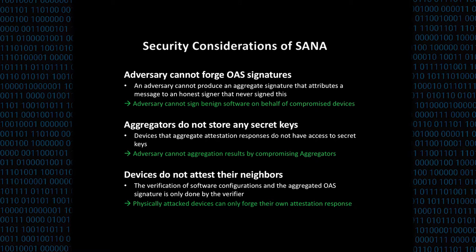Security considerations: since the adversary can't forge an OIS signature or create an aggregate attributing a message to an honest signer who didn't sign it, it can't sign any software configuration on behalf of a benign device. Since aggregators store no secret keys, physically attacking an aggregator gives the adversary no benefit. And since devices don't attest their neighbors — attestation only happens at the verifier — physically attacking a device won't help any other device evade detection.